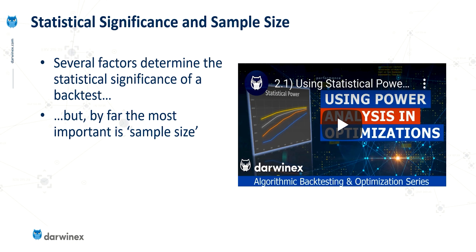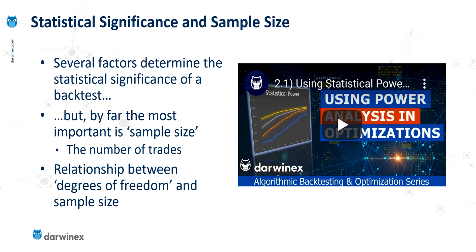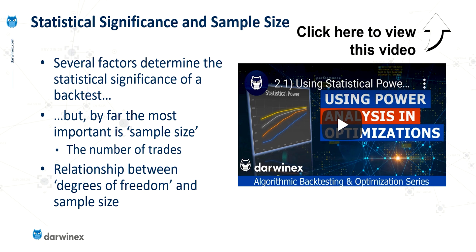Sample size is a general statistical term for the number of events or items being analysed — within the context of trading, this is the number of trades that form the backtest. There's a really important relationship between what's called the degrees of freedom and the sample size or number of trades. Putting degrees of freedom into the context of an optimisation, this is analogous to the number of parameters we're simultaneously attempting to optimise. The higher the degrees of freedom, the higher the sample size needs to be to give you statistical significance. This is why traders who attempt to optimise too many parameters will almost certainly struggle for statistical significance and will be doing what's called overfitting.